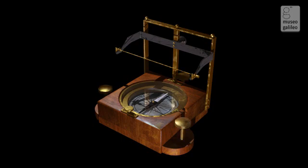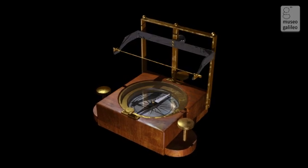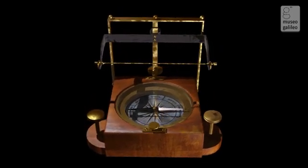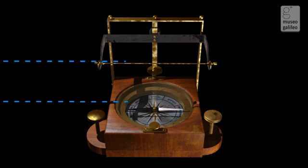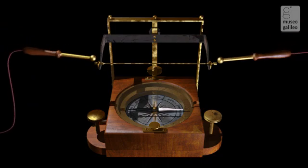After arranging the device so that the magnetic needle is parallel to the conducting wire, the two ends of the wire are connected to the electrodes of an array of batteries and a current is sent through it.